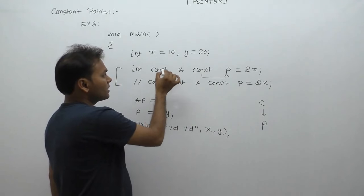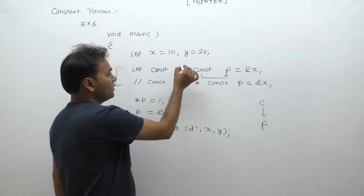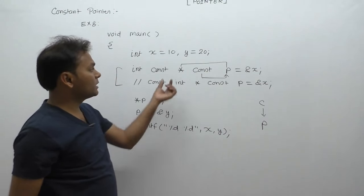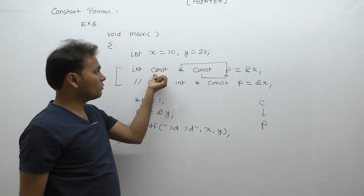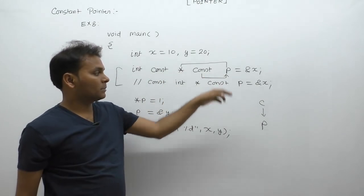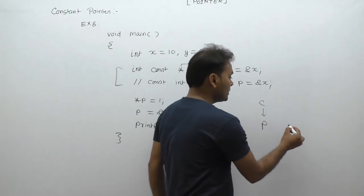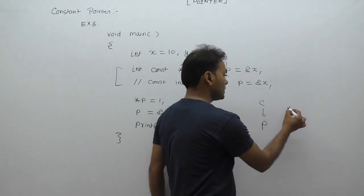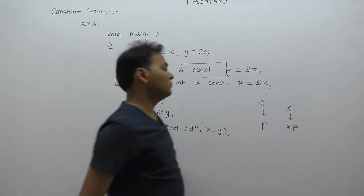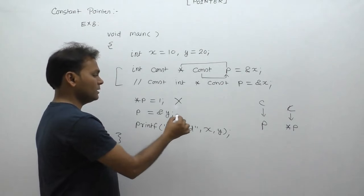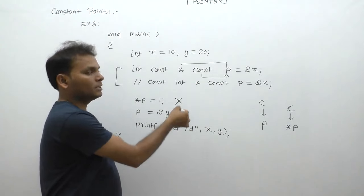The second const is applied upon star p. In this case, when const is applied just before p or star p, star p is constant according to the constant location. In this case, p is constant as well as star p is also constant - both are constant. In this case, star p may change and p may change - both may change.